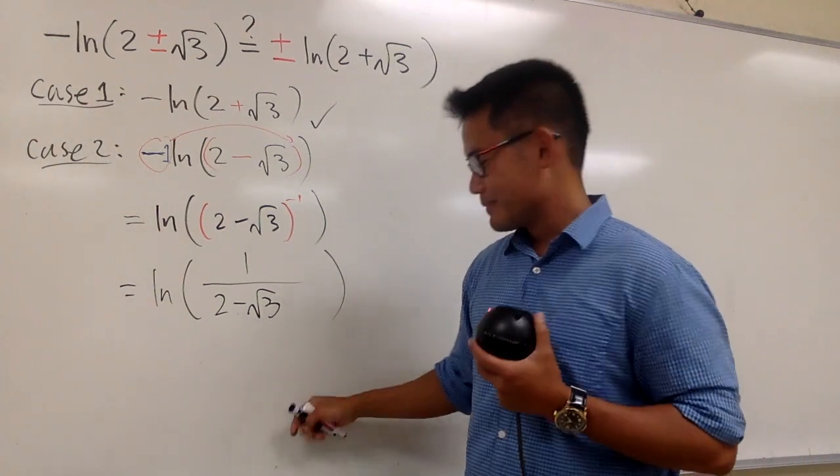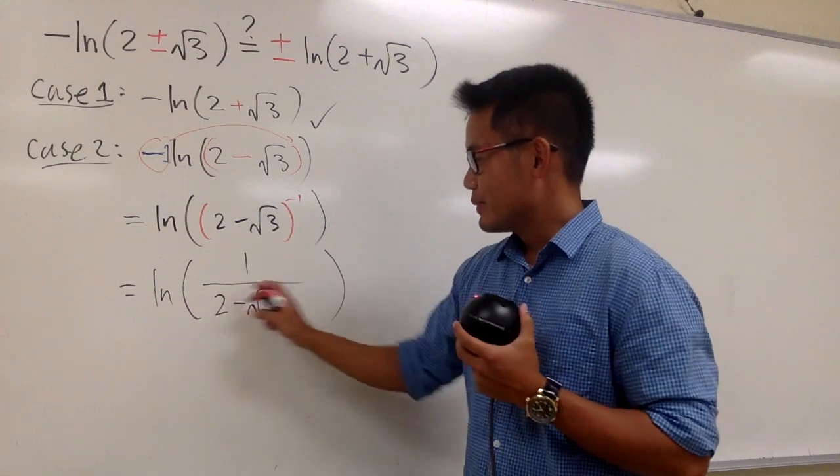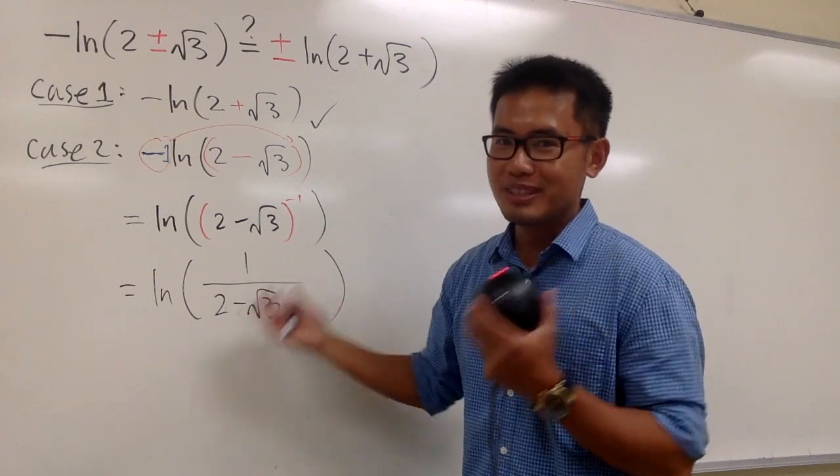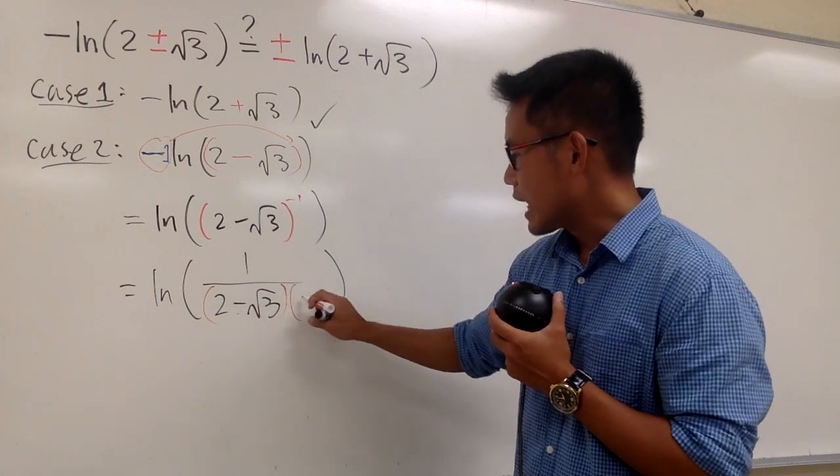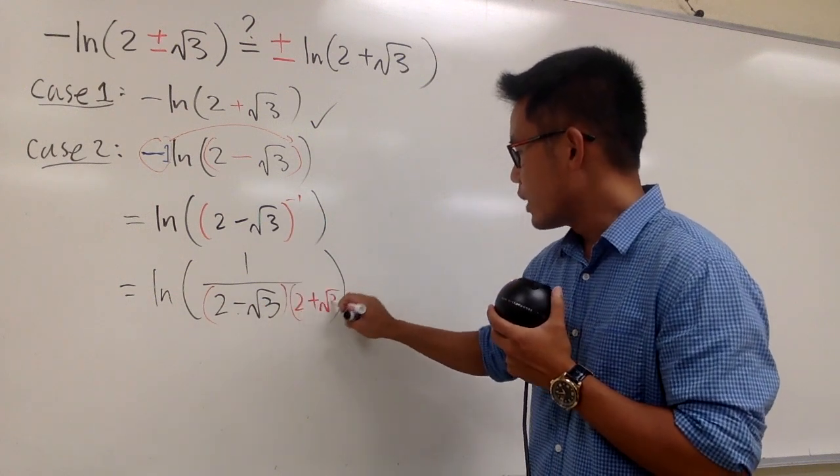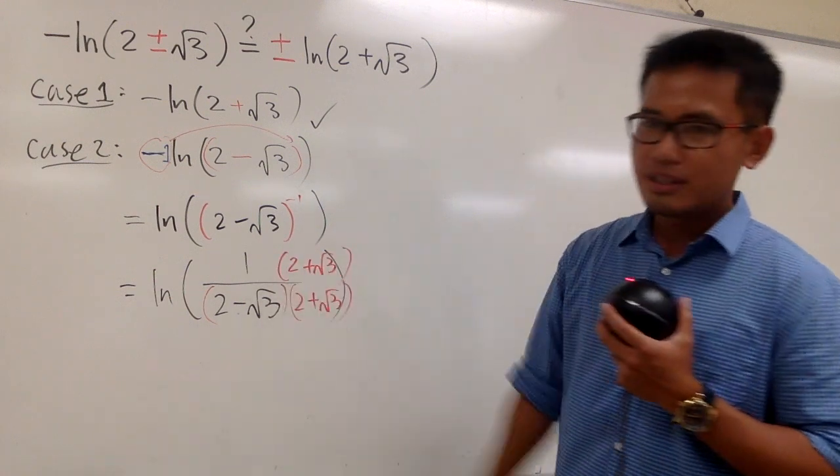And now what? Well, here is just a usual algebra part, because we have 2 minus square root of 3 in the denominator. Rationalize the denominator then. So I can just go ahead, multiply the bottom and the top by 2 plus square root of 3, and likewise, 2 plus square root of 3. That's the conjugate, isn't it?